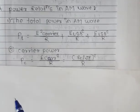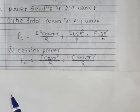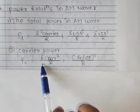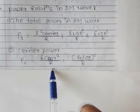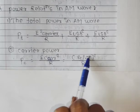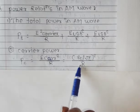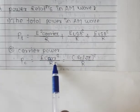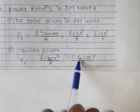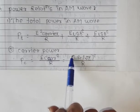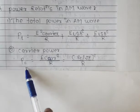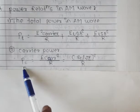The next formula is carrier power. Carrier power is denoted as PC equals E_carrier squared upon R, which equals (EC divided by root 2) whole squared, divided by R. This means E_carrier equals EC divided by root 2, where EC is the peak carrier amplitude. This is the formula for carrier power.